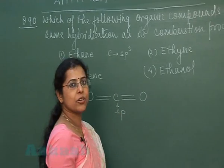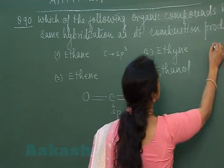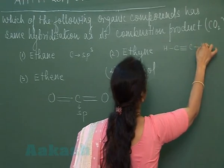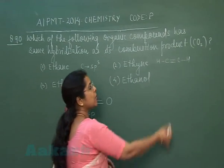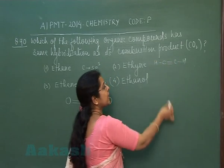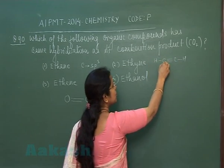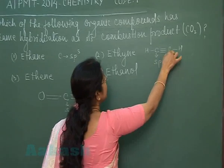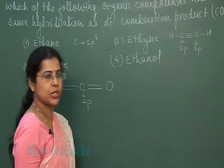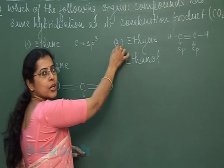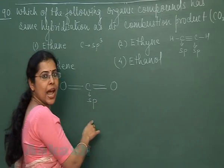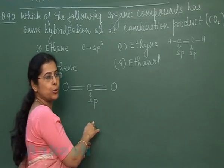The second option is ethyne, the simplest alkyne: C≡CH. Here the carbon atom is bonded to one triple-bonded carbon and one hydrogen atom, so both carbon atoms are present in the SP hybrid state. This is the option having the same hybrid state of carbon as in CO₂.